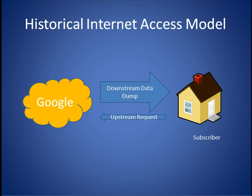Historically, Internet access has involved moving small amounts of information from the subscriber to the web, followed by moving large amounts of information from the web down to the subscriber. For example, doing a search: the user sends a small string of data requesting information from Google, and Google responds by dumping a huge load of data onto the user's desktop. Small upstream, big downstream.